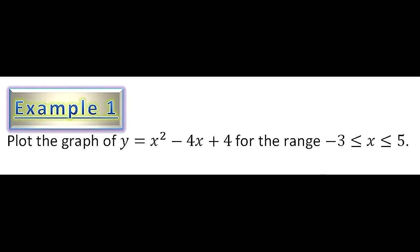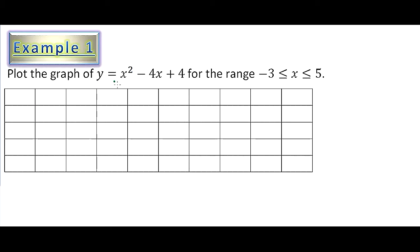Example 1: draw the graph of y = x² - 4x + 4 for the range -3 ≤ x ≤ 5. To draw this graph, we need a table. In this column we put the terms of x: x, x², -4x, 4, and y. We obtained these from our function x² - 4x + 4. From our given range, x ranges from -3 to 5, so we will put our values of x in the table.